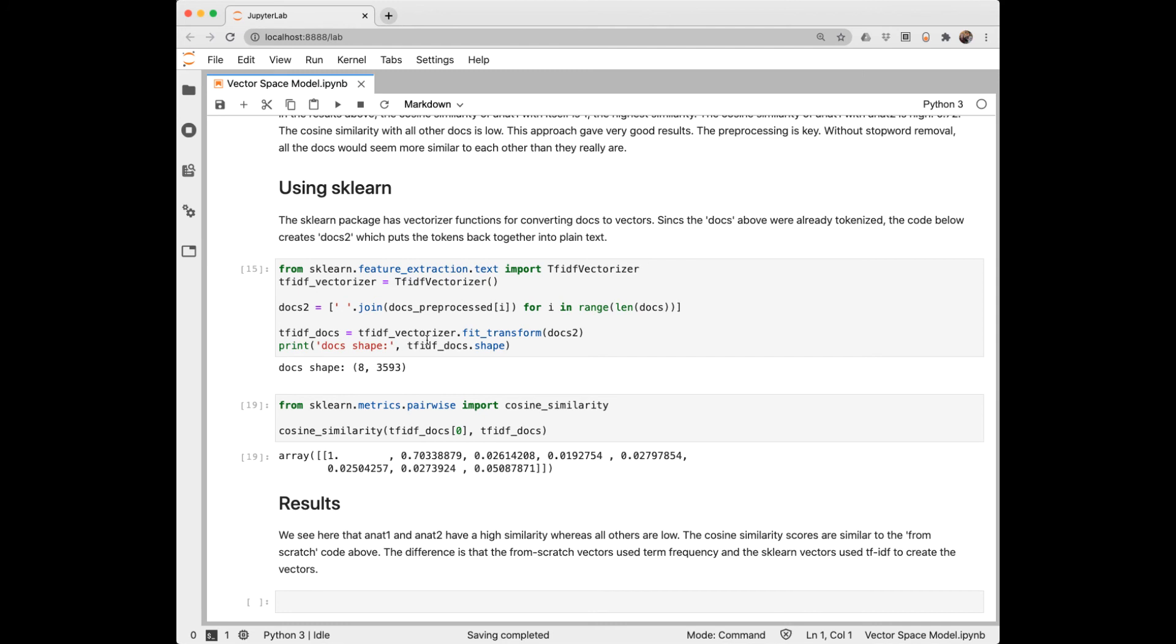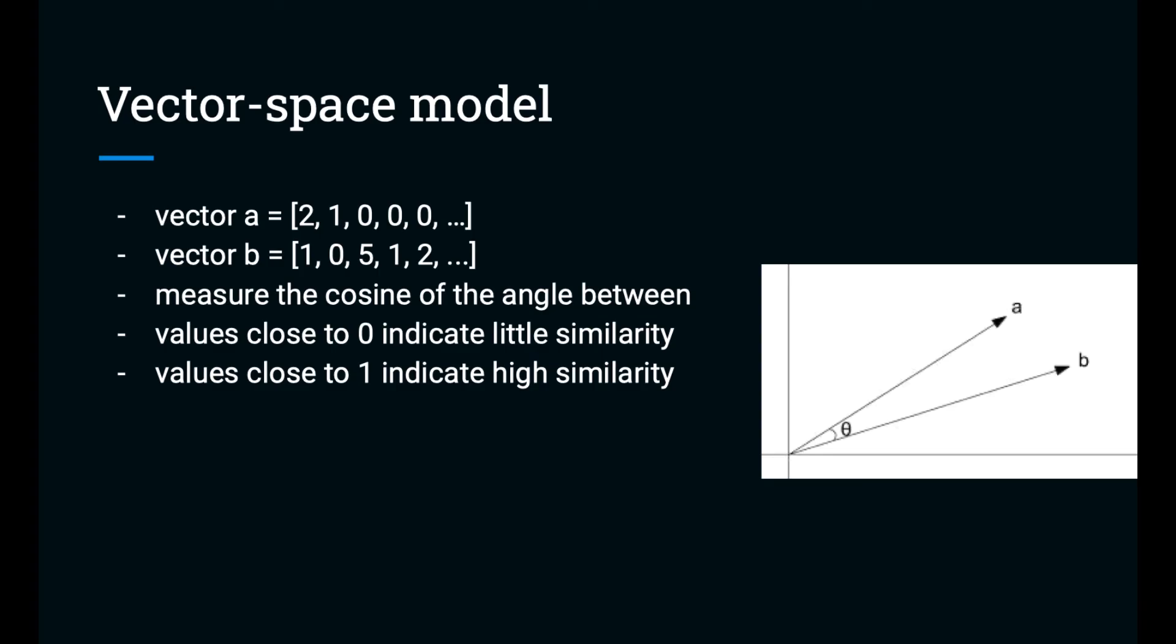And we see that we have eight documents and this is our vocabulary. The tfidf will have its own internal stop words. It eliminated a few more words than our NLTK stop word list. And we also can take advantage of sklearn's cosine similarity metric. And what we see here is we get very similar results. The first document cosine similarity with itself is one. And with its second half is 0.7, very similar. And we get very low cosine similarity for the other documents.